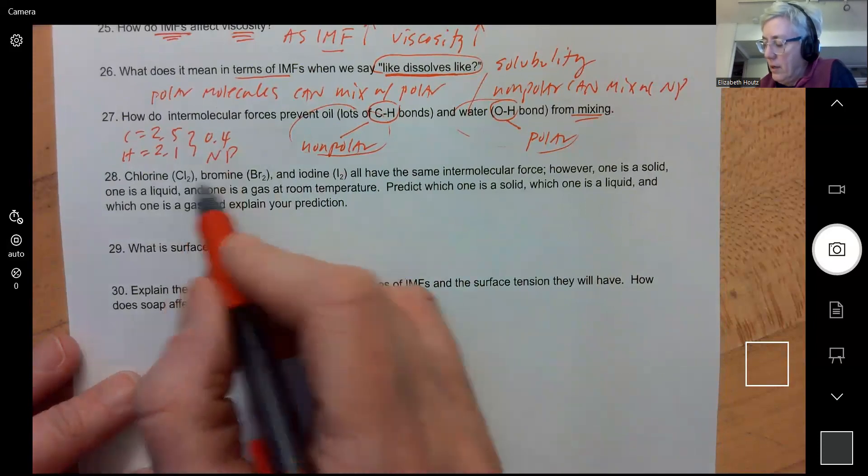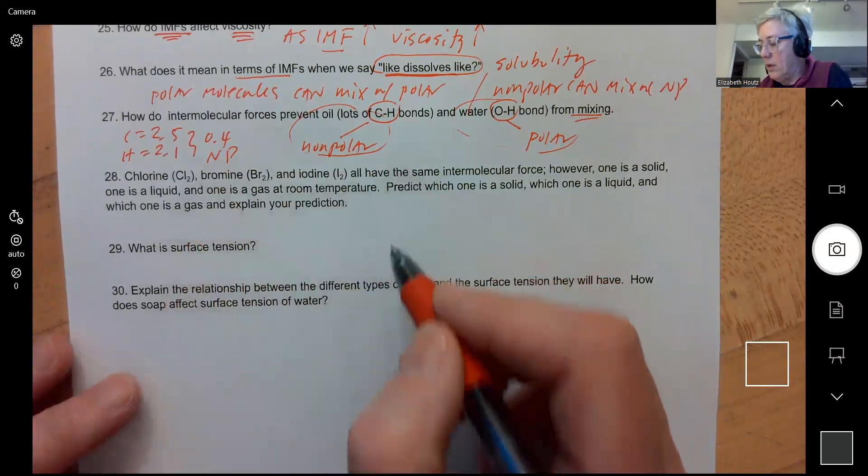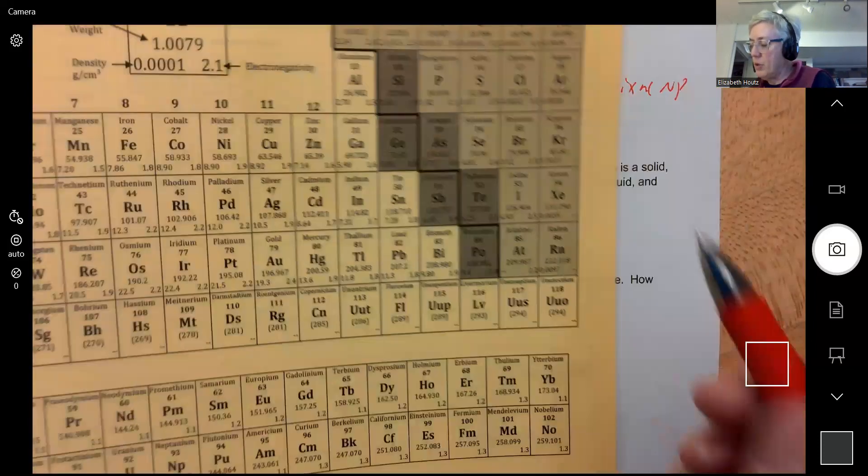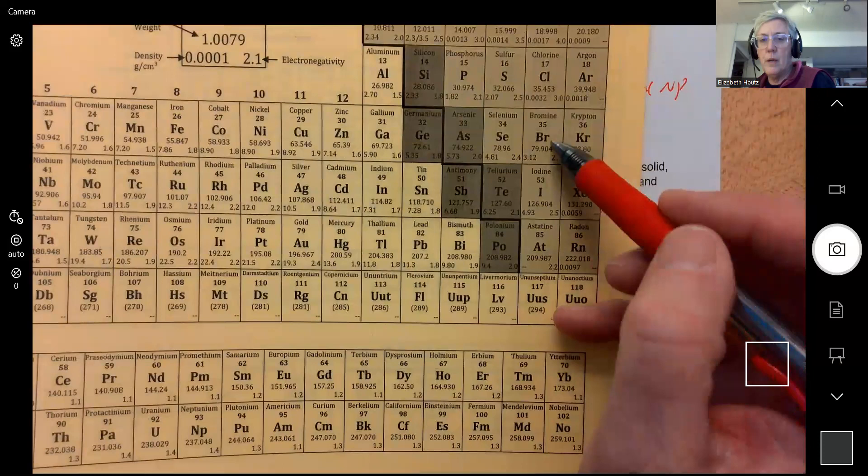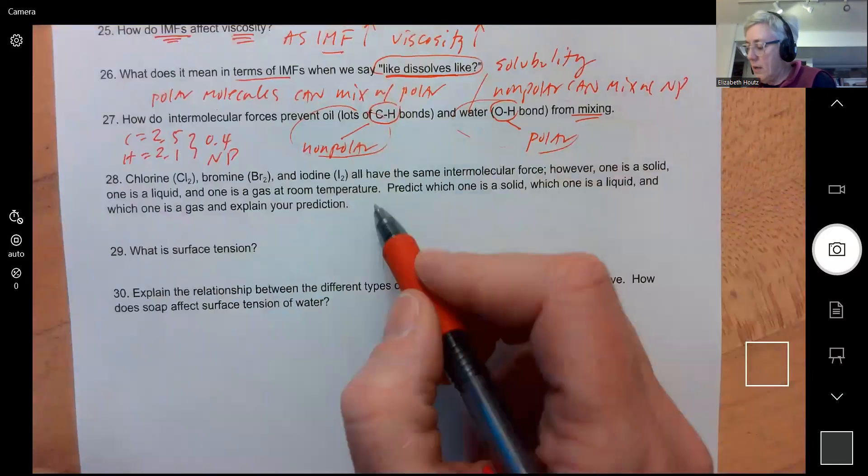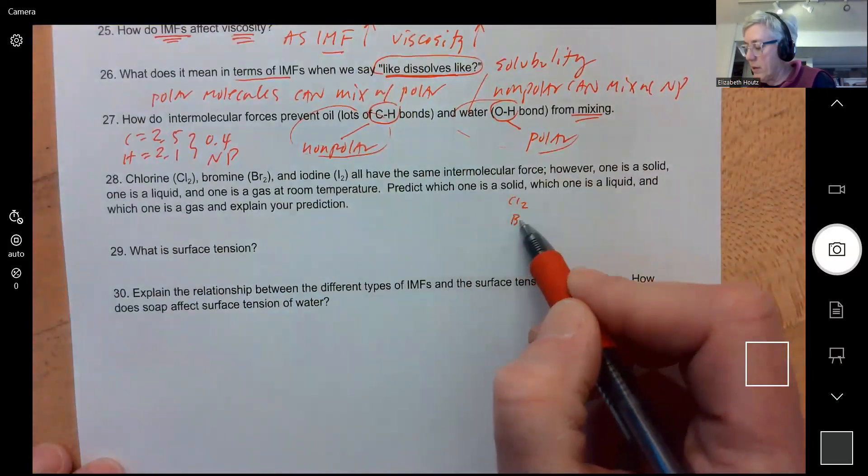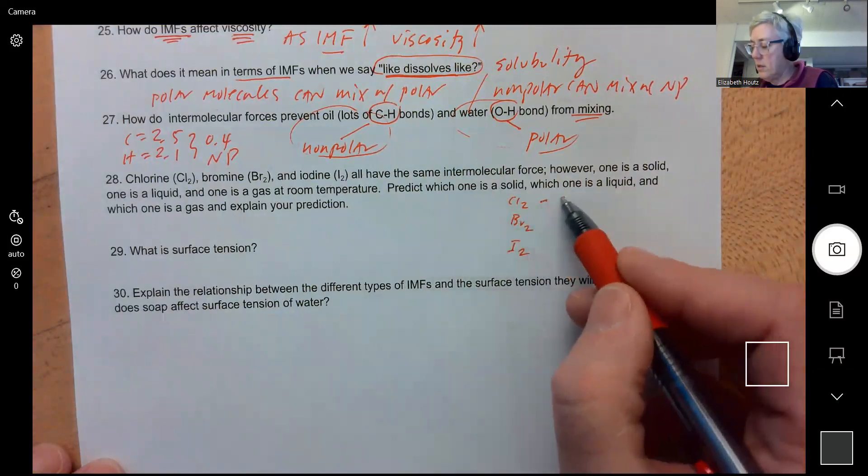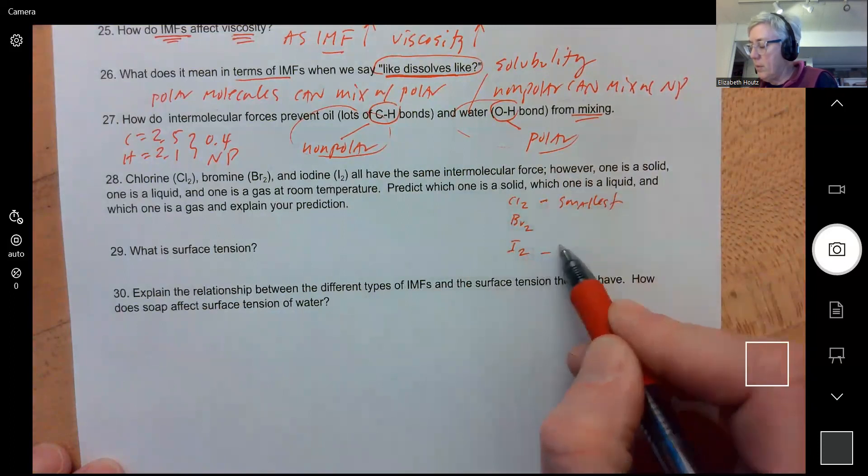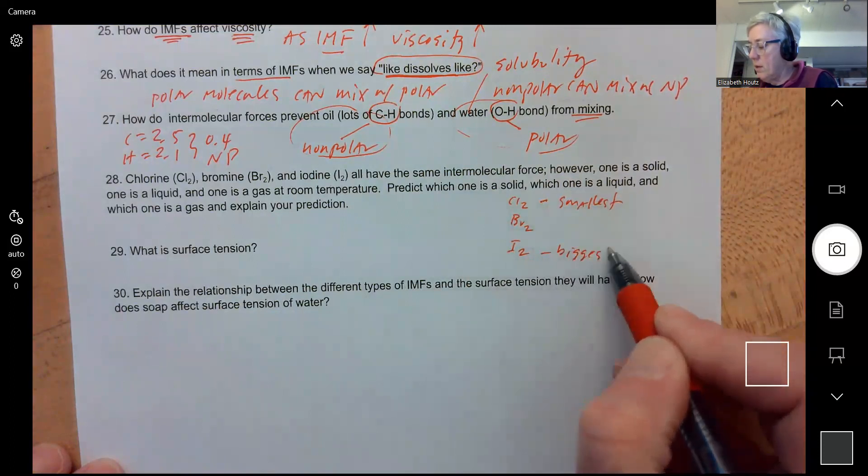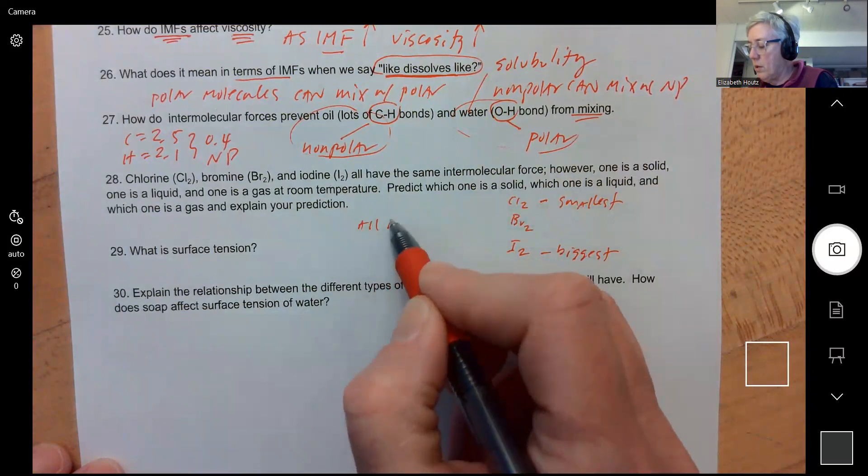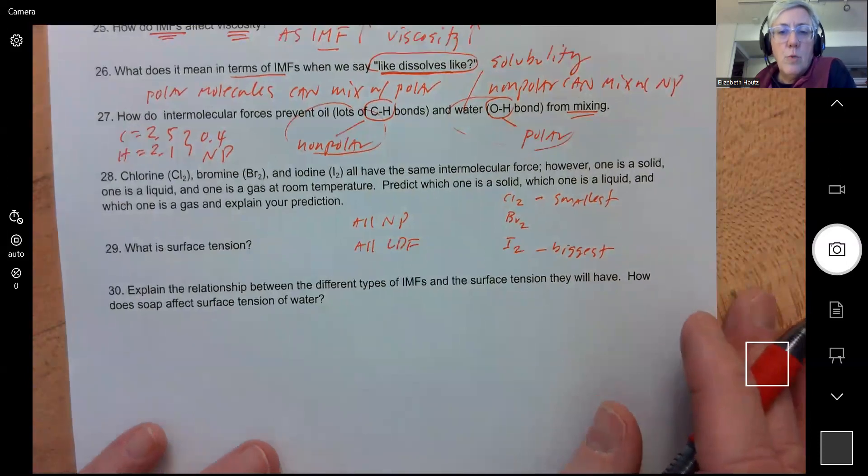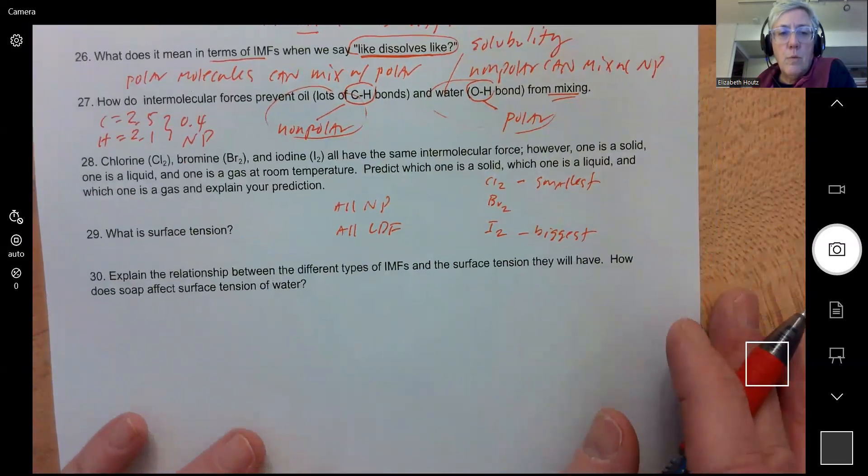Question 28: Chlorine, bromine, and iodine all have the same intermolecular force. And I hope in your head you're saying, oh, London dispersion. Chlorine, bromine, and iodine. So they go down that column on the periodic table like this. Chlorine is the smallest, iodine is the biggest of these three. They're all non-polar. They all only have London dispersion forces. Which one's a solid and which one's a liquid and which one's a gas?